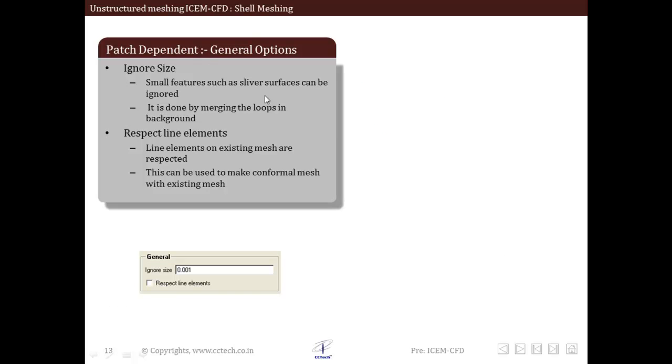Let us see the general options in detail. In this we have ignore size and respect line elements. Within ignore size, small features such as sliver surfaces can be ignored. It can be done by merging the loops in the background.